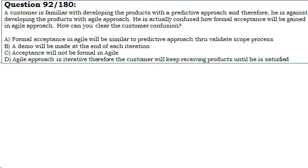A customer is familiar with developing products with a predictive approach and therefore is against developing products with an Agile approach. He is actually confused how formal acceptance will be gained in Agile approach. How can you clear the customer confusion?